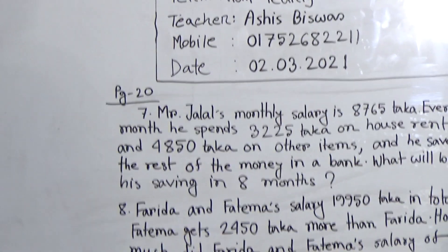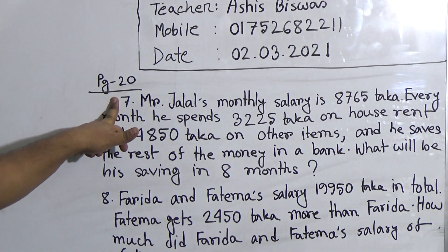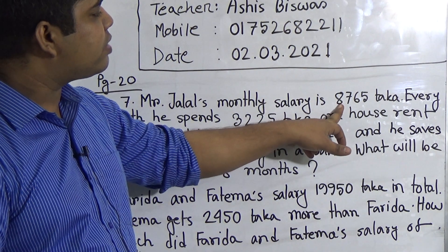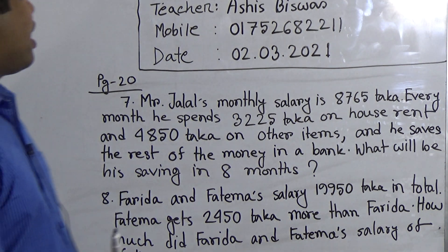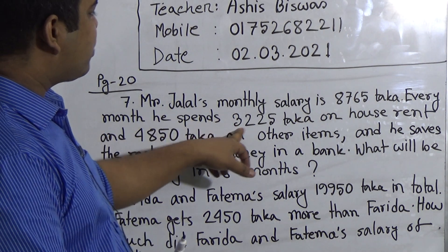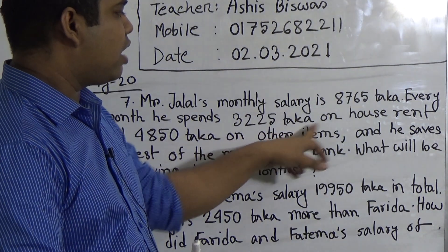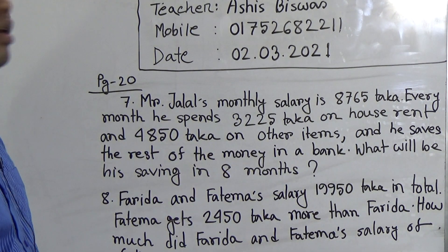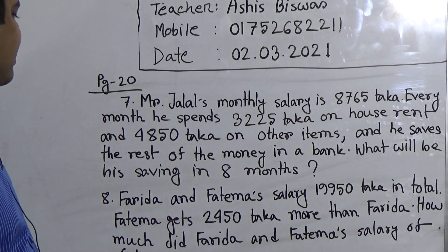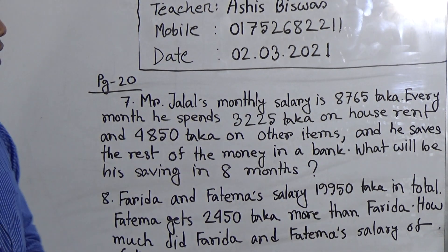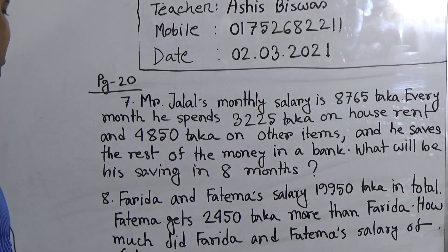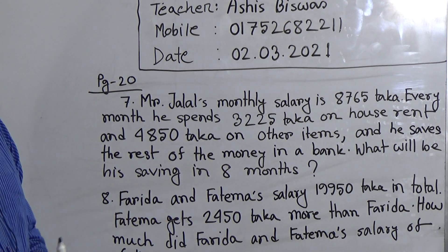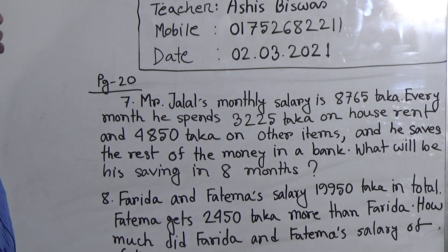First of all, we shall solve question number 7. Let us read the question. Mr. Jalal's monthly salary is 8,765 Taka. Every month he spends 3,225 Taka on house rent and 4,850 Taka on other items, and he saves the rest of the money in a bank. What will be his saving in 8 months? We have read the question; now we shall make a plan on how to solve this math.